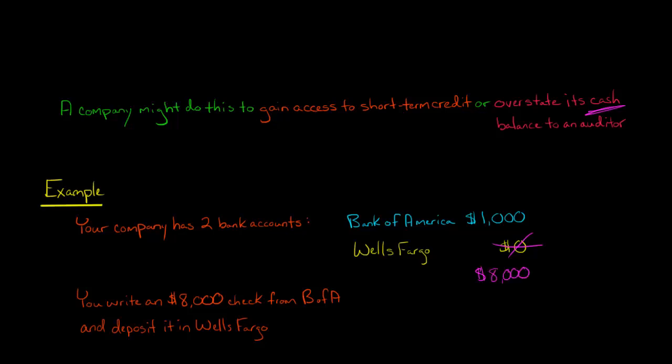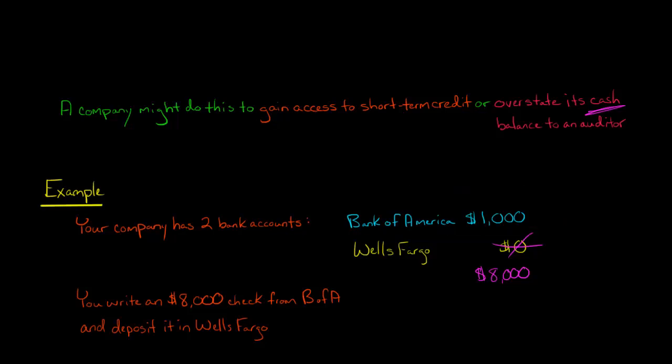You just made a deposit — but you only have $1,000 in the Bank of America account. The person committing this fraud is hoping that Bank of America won't immediately know about it, because it takes some time before the check clears and is actually paid out of that account. The fraudster is exploiting the time it takes for a check to clear. They've written a check with insufficient funds to cover the $8,000, yet the money appears in Wells Fargo.